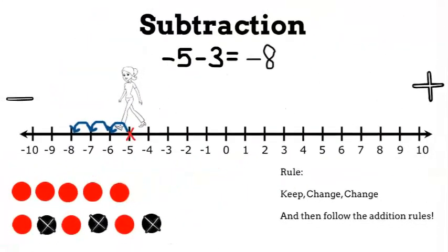The rule for subtraction is kind of easy to remember: keep, change, change. That's all you have to remember. So for the problem, we want to keep negative 5, change the subtraction to addition, and change the positive 3 to negative, then follow the addition rules. Negative 5 plus negative 3 equals negative 8.